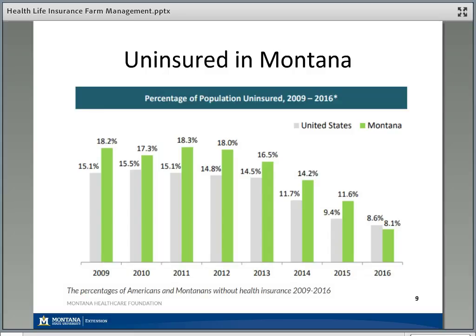Looking at the uninsured rate in Montana and the United States over time: the Affordable Care Act was passed in 2009, but some components were immediate while others were phased in over years. One early provision allowed children to stay on their parents' health insurance plan longer. Medicaid expansion was a choice given to states; in Montana that didn't kick in until 2016. The result is the uninsured rate in Montana has fallen from about 18% down to about 8% — more than half of the previously uninsured have found health insurance.